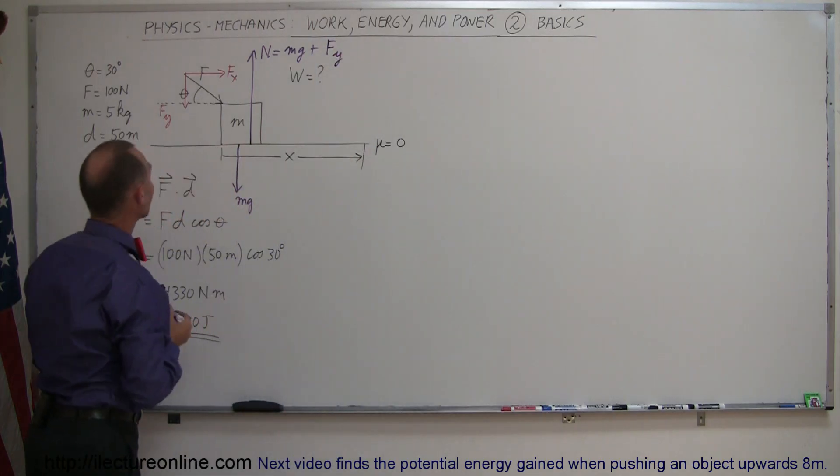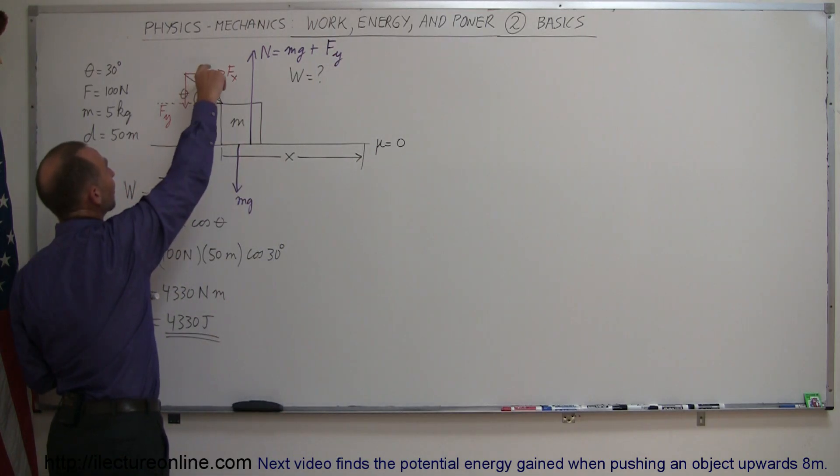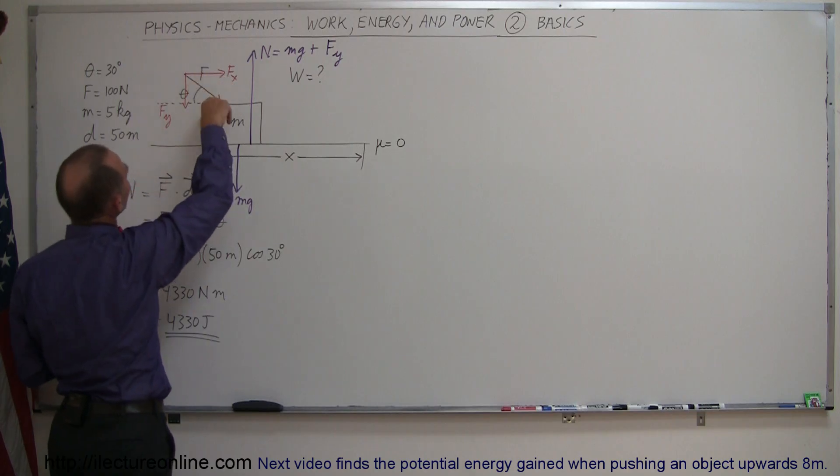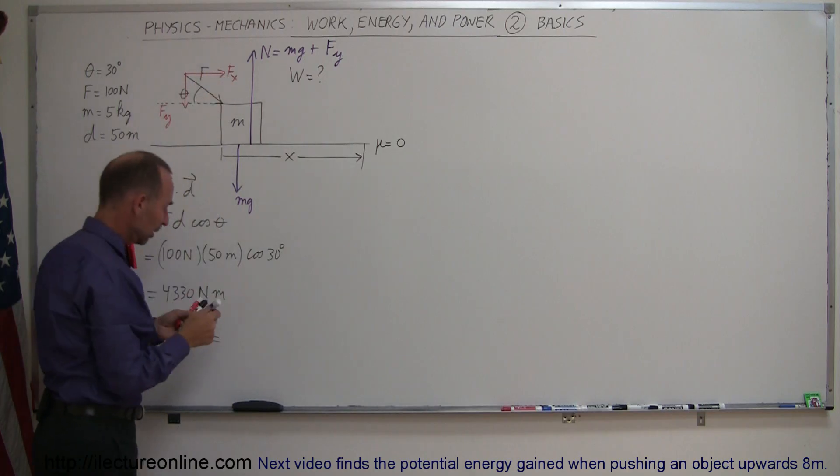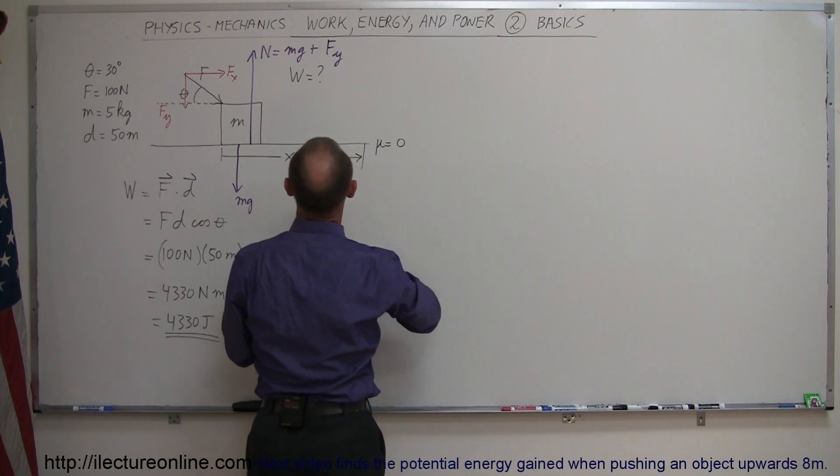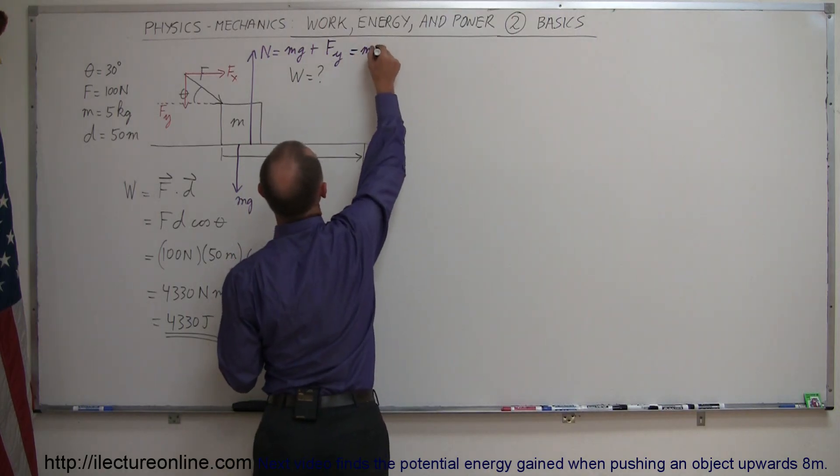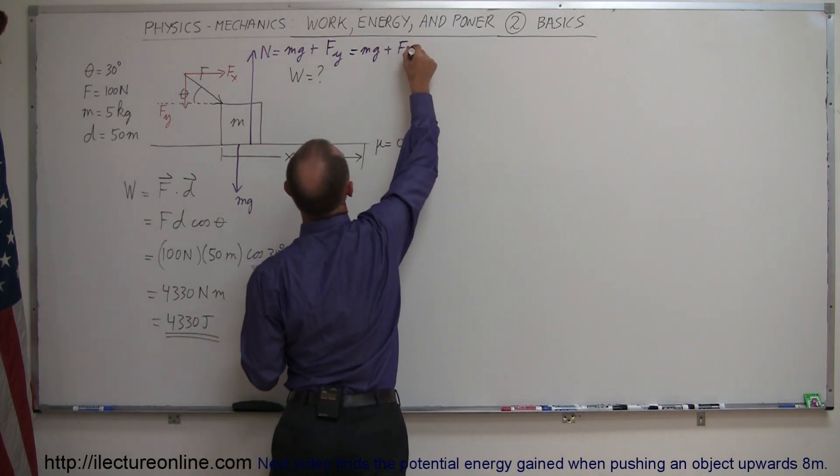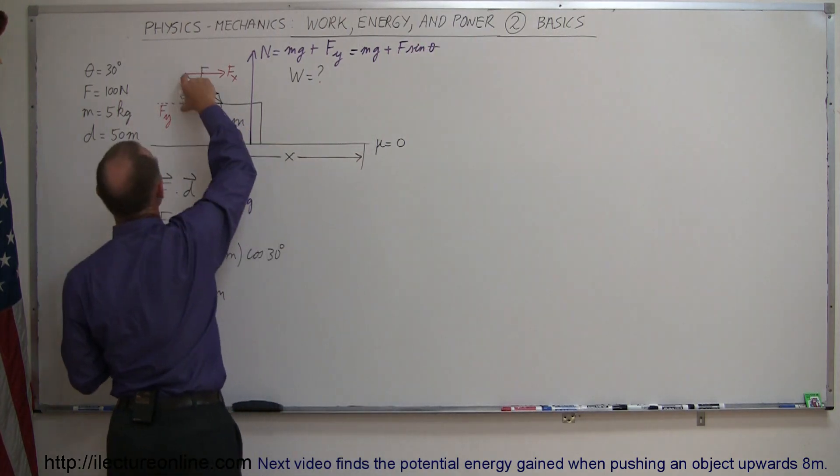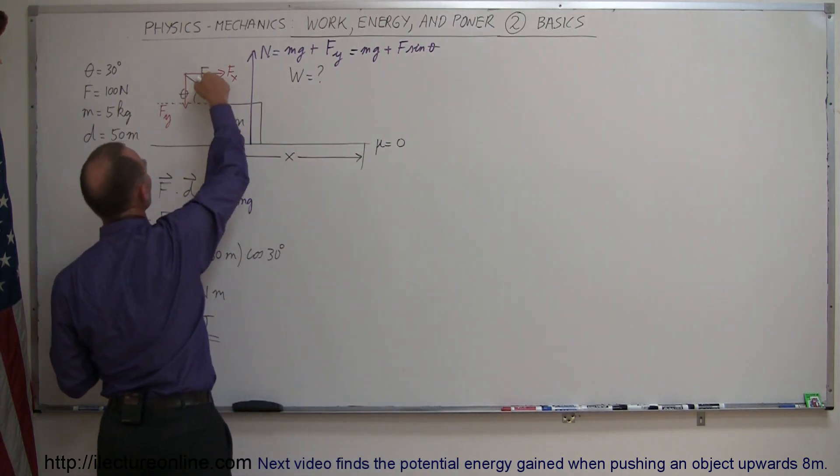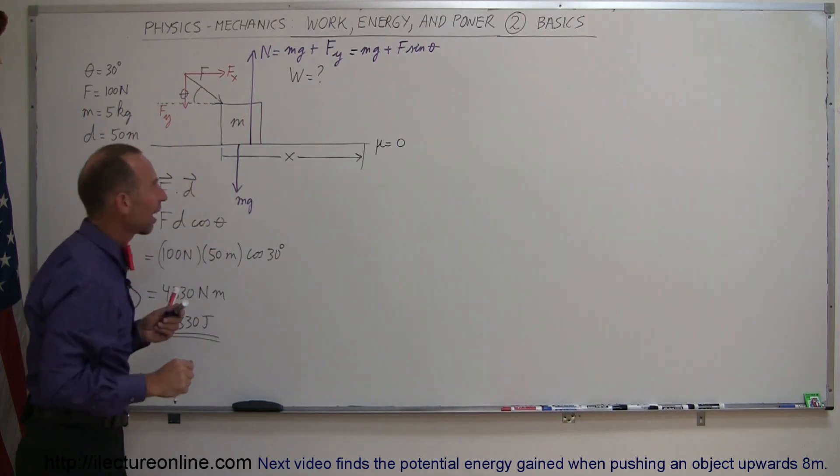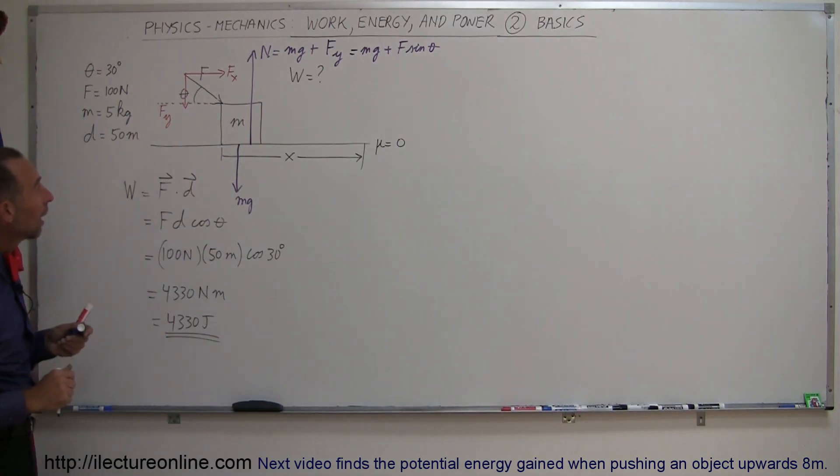And of course, F sub y can be found by taking the F times the sine of the angle, because it's the opposite side to the angle, so we can say this can be written as the weight mg plus the force times the sine of the angle theta. Remember that this is opposite to the angle, this is the force, so we know that's the sine of that angle theta.